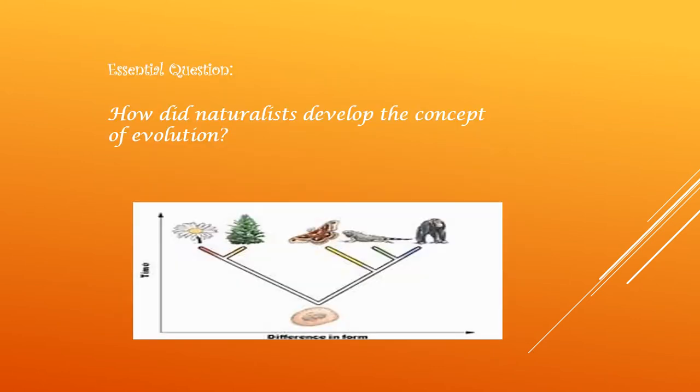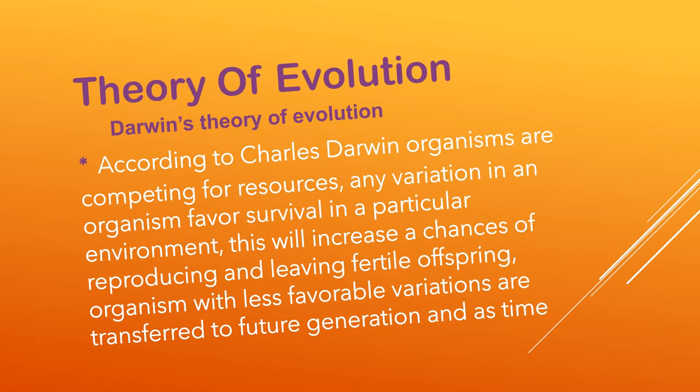Our essential question: how did naturalists develop the concept of evolution? Billions of years ago, Earth became a witness to countless life forms that lived in its every conceivable corner. Earth has been a major factor in the emergence and disappearance of many organisms that diversified into various forms in order to survive. Our present understanding of evolution is based on several supporting theories and evidence.